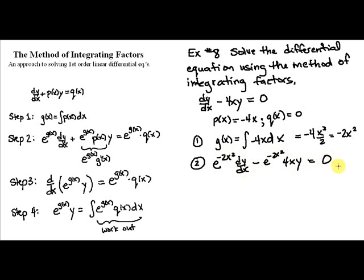Then we want to recognize for step 3 that this is the result of a product rule, that if we took the derivative of e to the negative 2x squared times y, we would get this. So let's check that out. We would have the first times the derivative of the second minus the second function, which is y times, now the rest should be the derivative of the first. The derivative of e to the negative 2x squared would be e to the negative 2x squared times the derivative of negative 2x squared, which is negative 4x. So in fact, that is exactly what we have, and that's equal to 0.